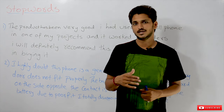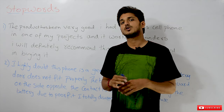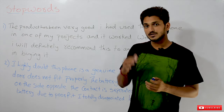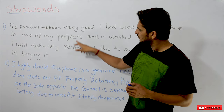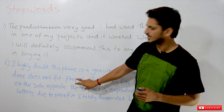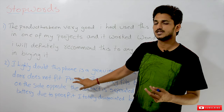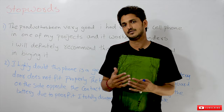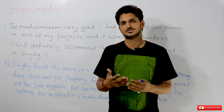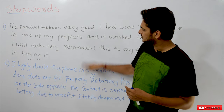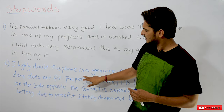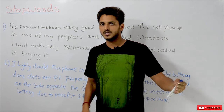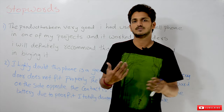In our previous classes we already discussed about the Amazon mobile feedback dataset. From the dataset we collected two feedbacks — one positive and one negative. The dataset has 70,000 different feedbacks collected on different mobiles from different customers. Please watch those videos from the beginning so that you will have a better understanding of the subject.